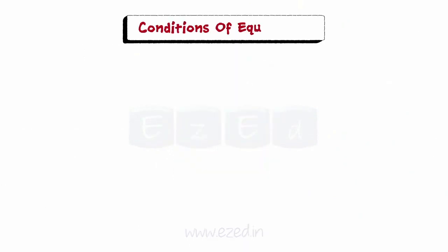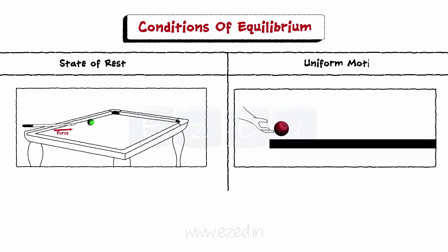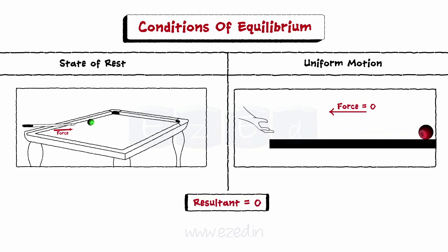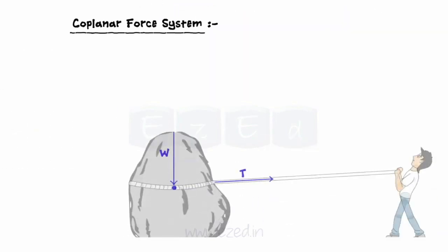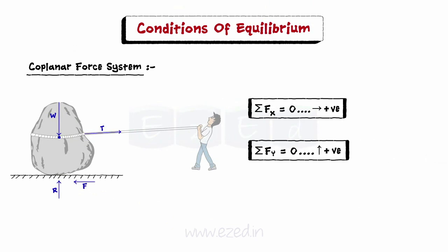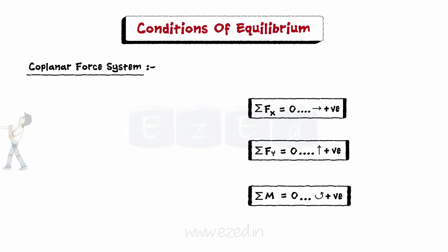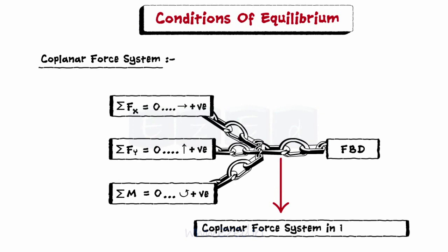We will now learn about the conditions of equilibrium. With the help of Newton's first law of motion, we can define a body to be in equilibrium if it is in a state of rest or uniform motion. For a body to be in equilibrium, the resultant of the system should be zero. This suggests that the sum of all forces should be zero and the sum of all moments should also be zero. For a coplanar force system, the equations of equilibrium will be as follows: sum of all forces in the x direction is zero; sum of all forces in the y direction is zero; sum of moments of all forces is zero. With the help of free body diagrams and on applying the above conditions, we will be able to analyze a coplanar force system in equilibrium.